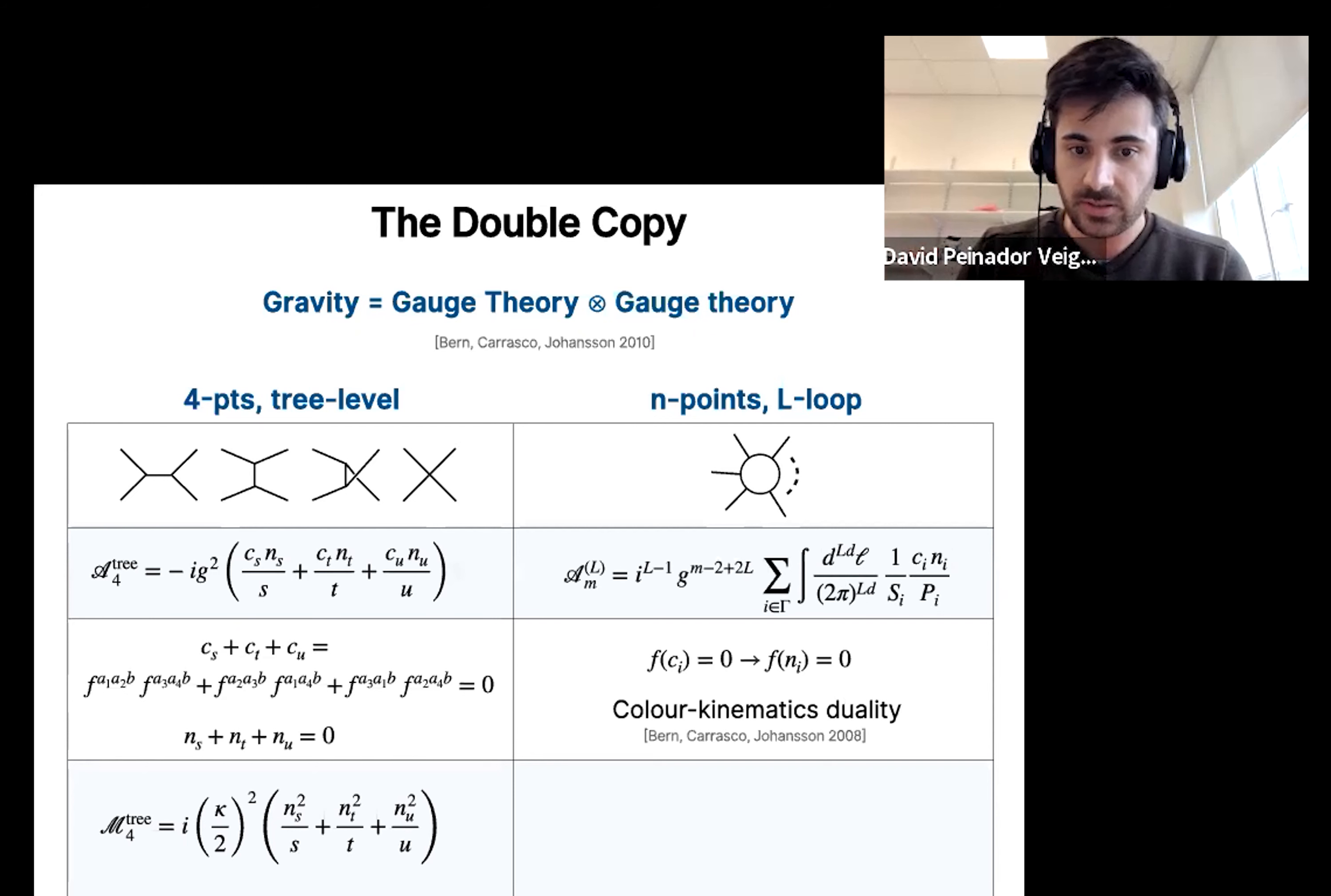But again, the C_i are not going to be independent because they are constrained by algebraic identities. The very non-trivial fact is that you can always, or it turns out that you can always rearrange the diagrams and the gauge in such a way that the kinematic factors satisfy the same algebraic identities. And this is called the color-kinematics duality. Using this fact, then we're in the same position as before, in which we can replace the color factors by kinematic factors, rendering a loop, n-point gravitational amplitude.